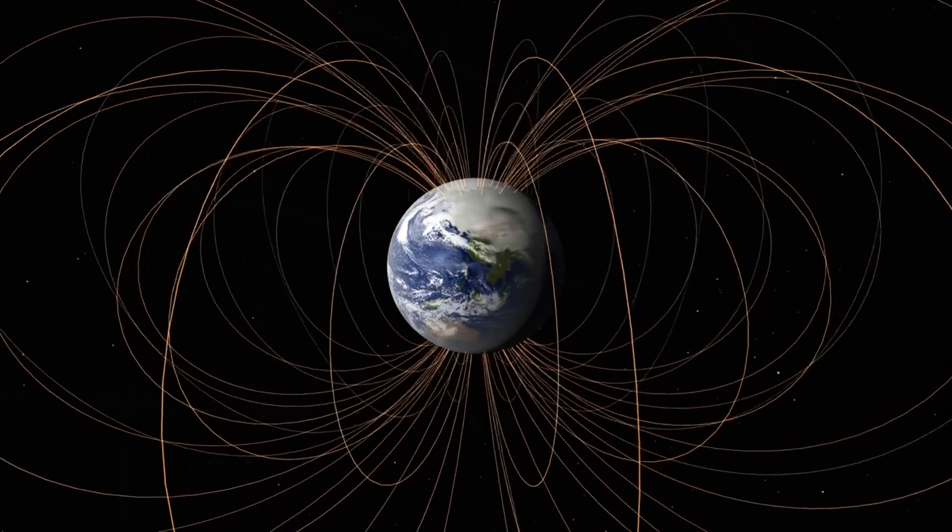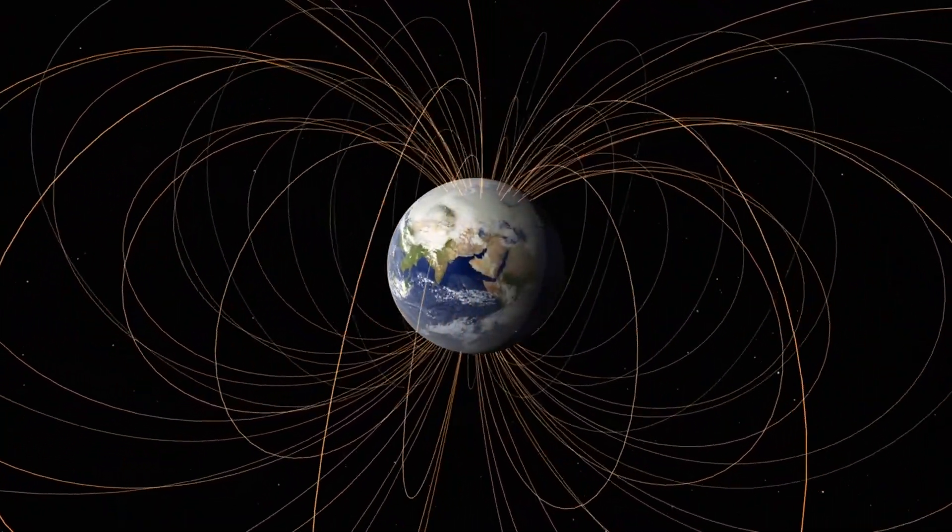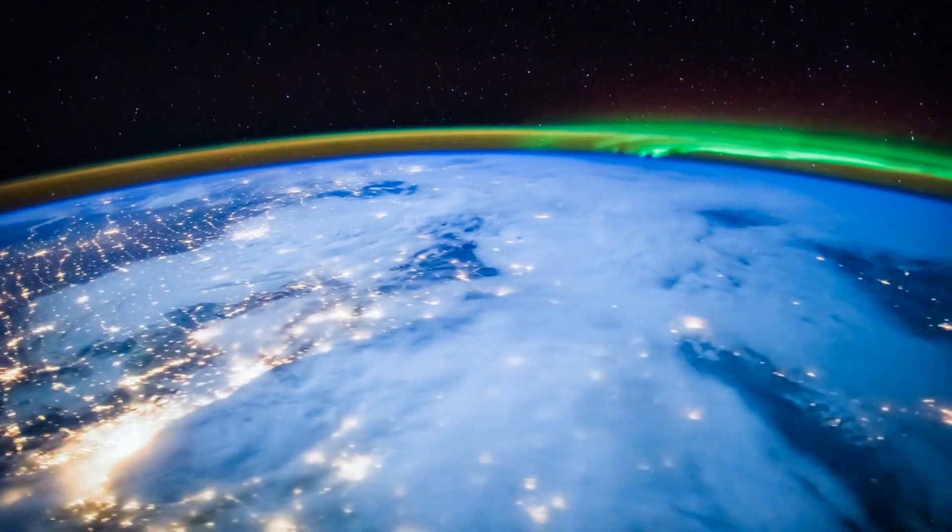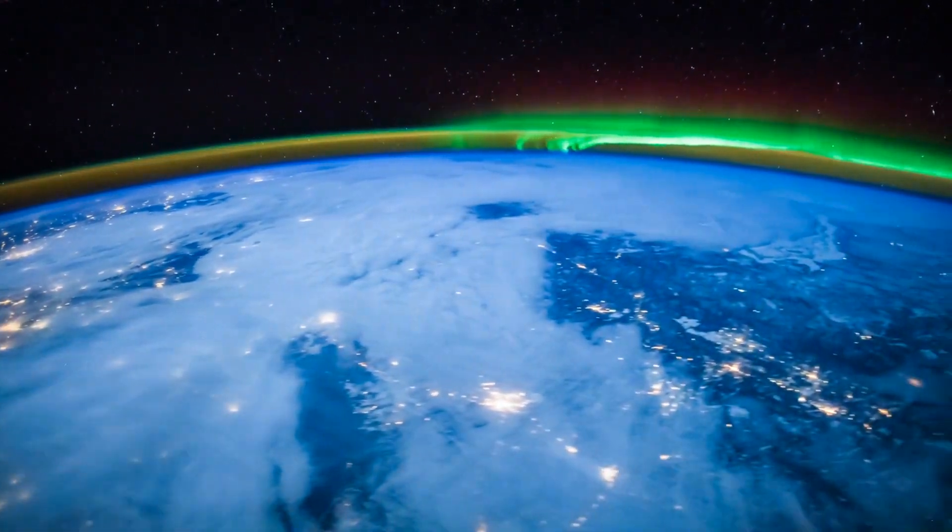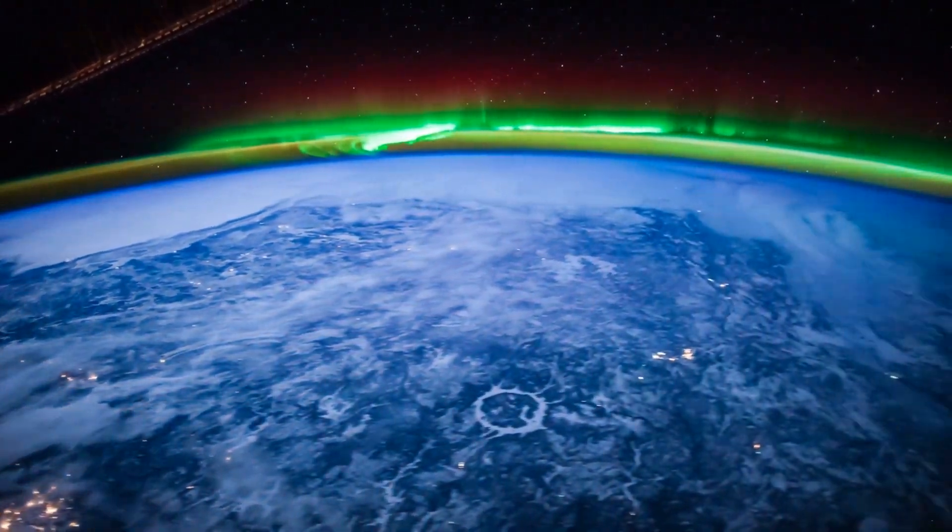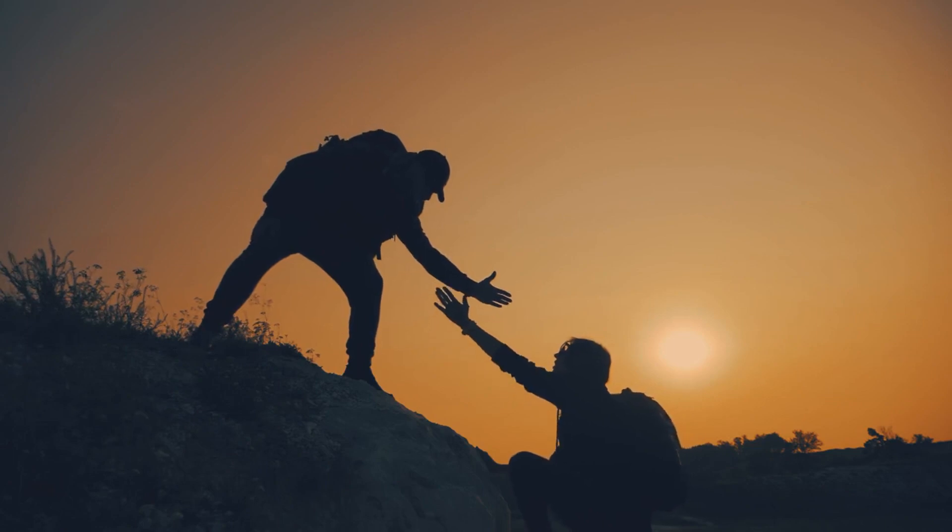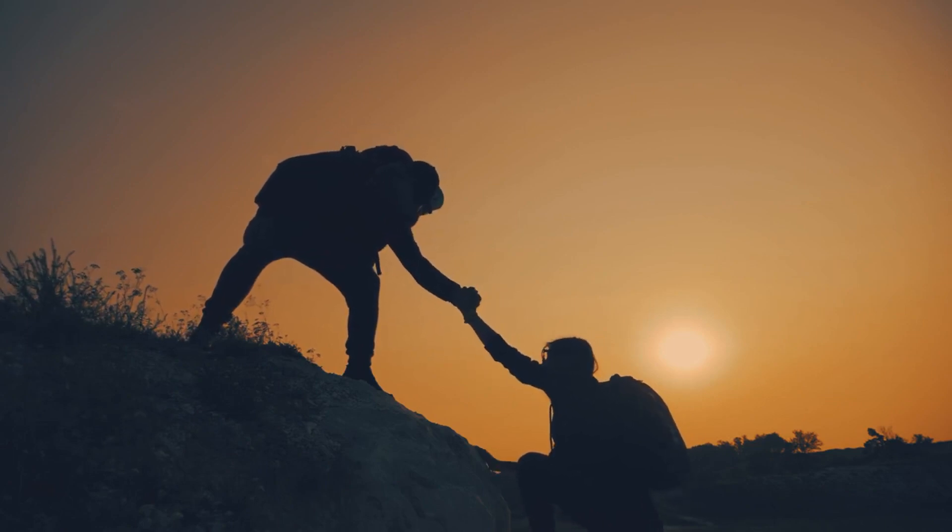The geomagnetic field has experienced a range of activity, from quiet to active levels. Anticipate the geomagnetic field to continue its fluctuation from quiet to active levels through October 3, influenced by the positive polarity CHHSS. Thank you for joining us on this cosmic adventure through Space Weather News.